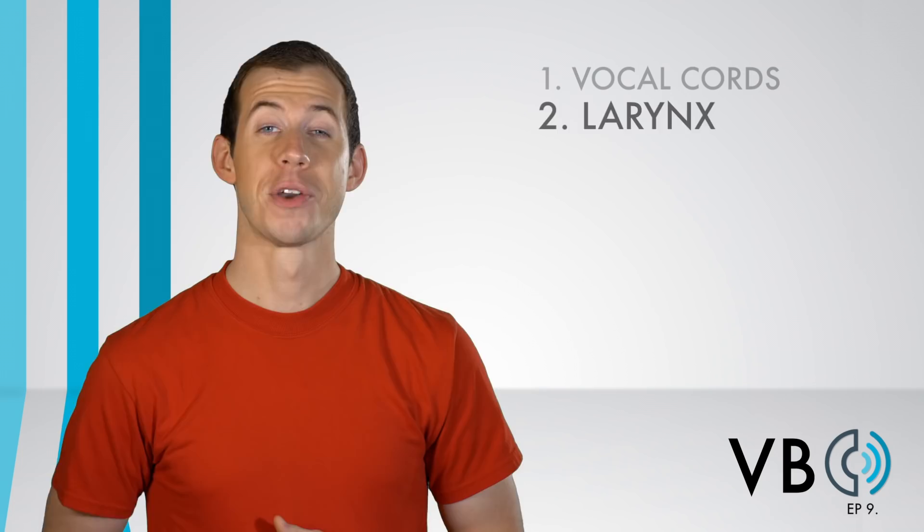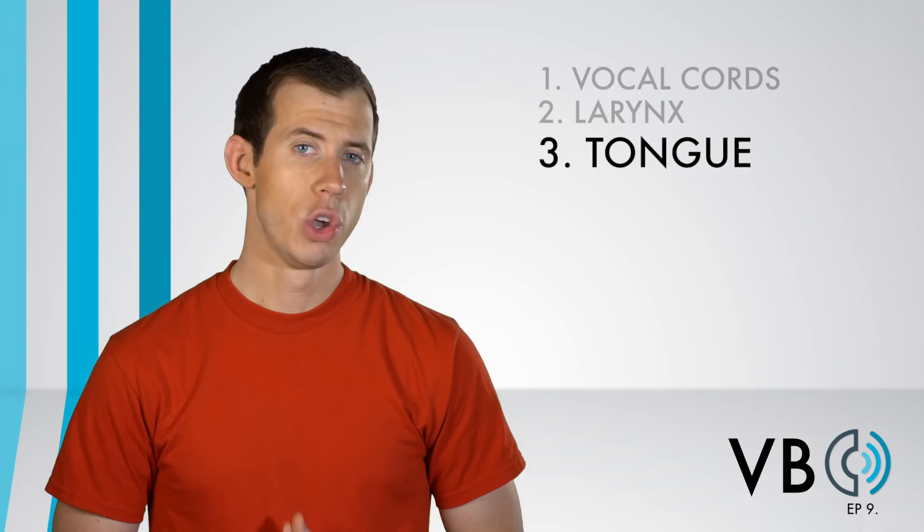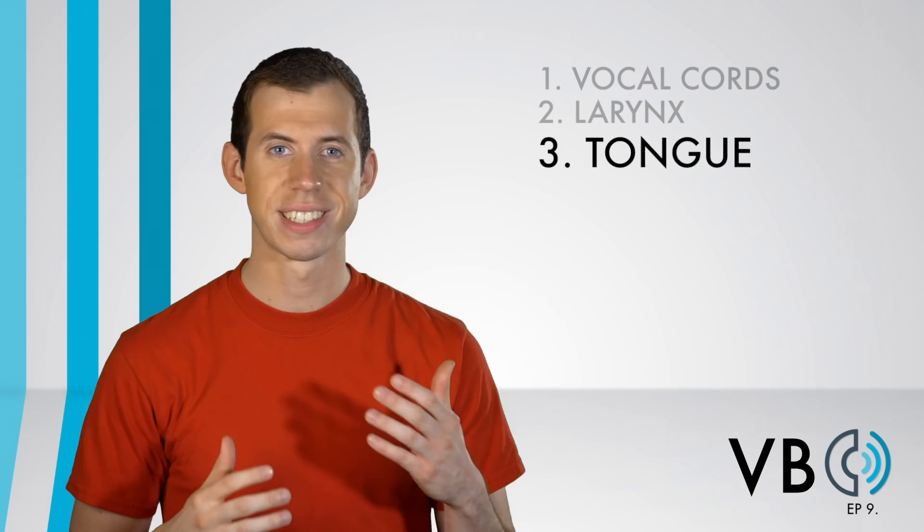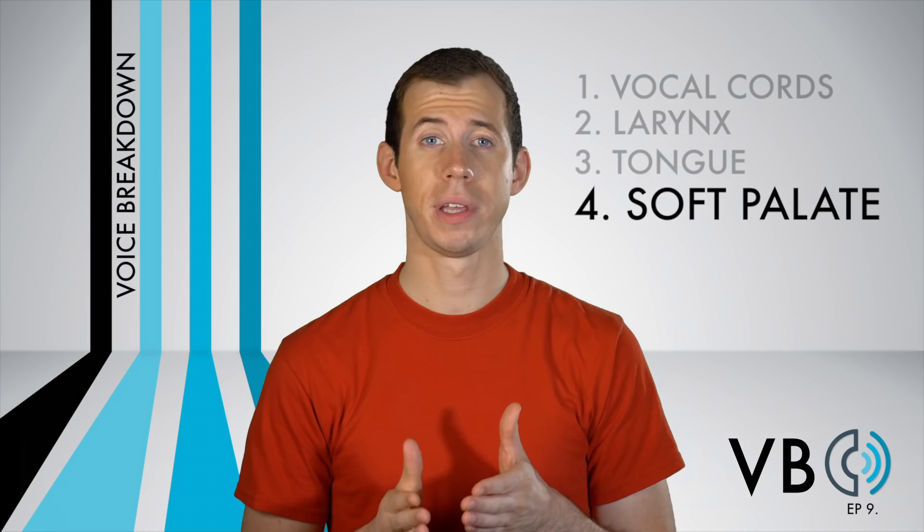Component number three: the tongue. The tongue is not a primary component for this voice. We do want to raise it slightly in the back just to add a bit more brightness and to make things sound even more effortful. Component number four: the soft palate. You can probably guess that we want some nasal resonance for this voice to continue to make the voice brighter. Lower the soft palate to allow this to happen.